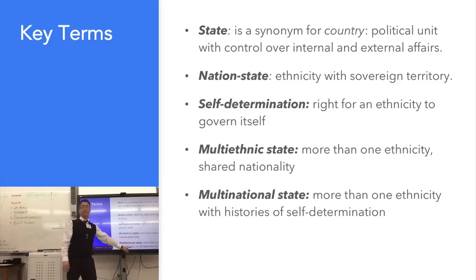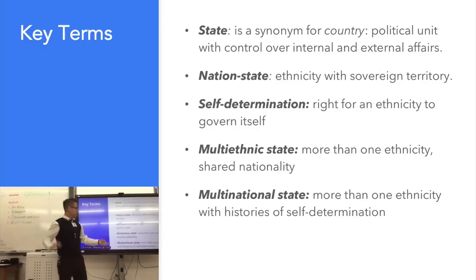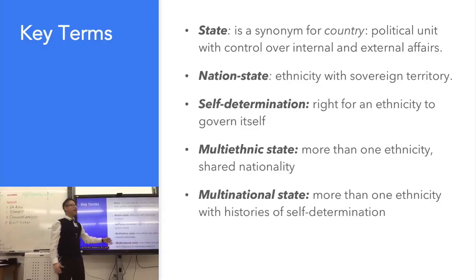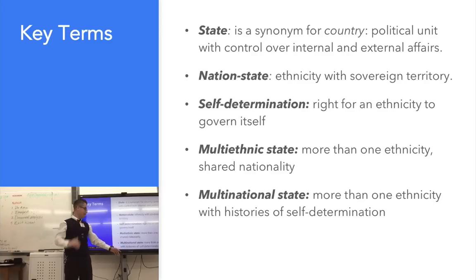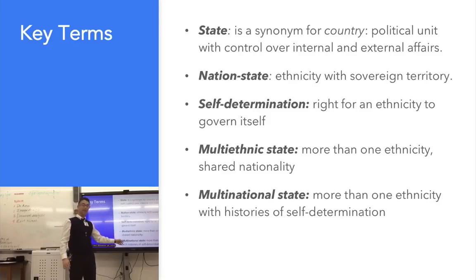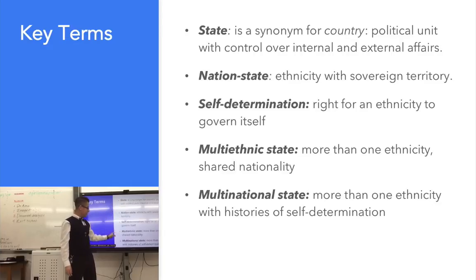A multi-national state means more than one ethnicity with histories of self-determination — a country in which many different nations live. The United States is also multi-national. The nations I'm talking about are Native Americans: the Cherokee, the Tigua, the Yaquis, the Iroquois, the Inuit, the Navajo — a bunch of nations of Native Americans living in the United States. That's why the U.S. is both multi-ethnic and multi-national, and even just a state. Notice how the United States can fit into all three.